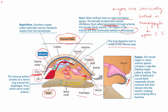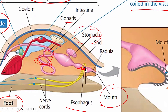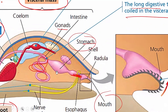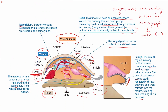The radula is a belt-like feeding organ whose backward-curved teeth repeatedly thrust outward and retract into the mouth, scraping and scooping like a backhoe. The nervous system consists of a nerve ring around the esophagus from which nerve cords extend into the dorsal region. Nephridia are the excretory organs that remove metabolic waste from the hemolymph. Thus mollusks have well-developed circulatory, digestive, nervous, and excretory systems.